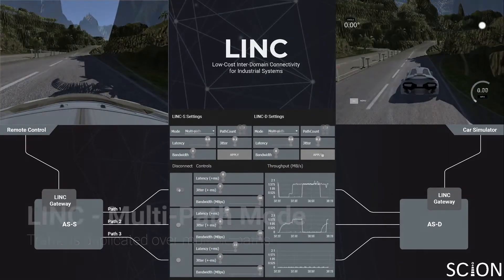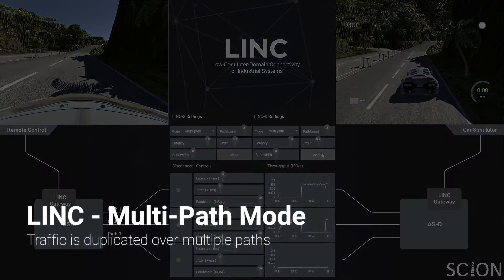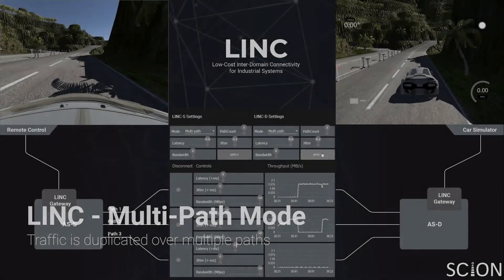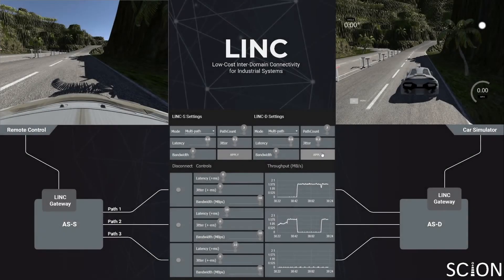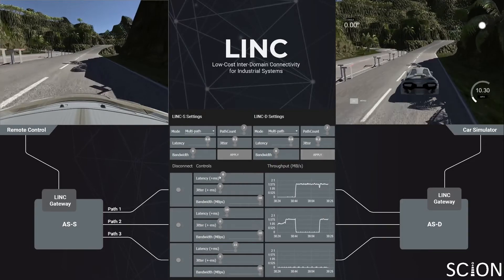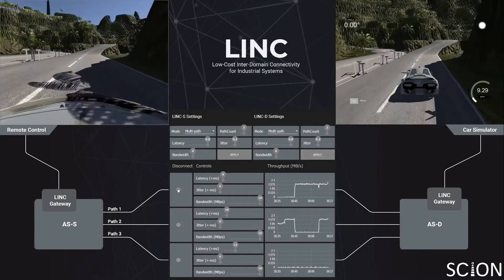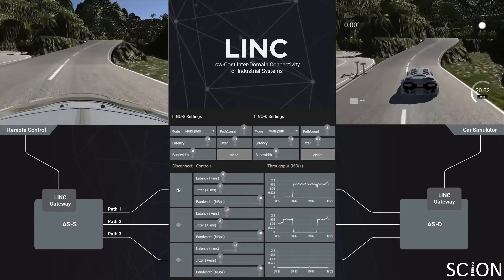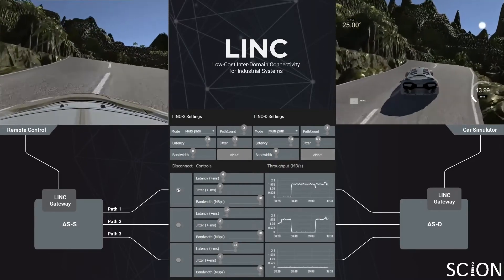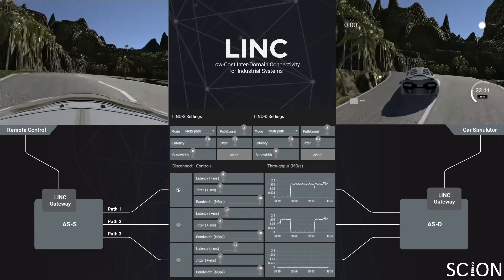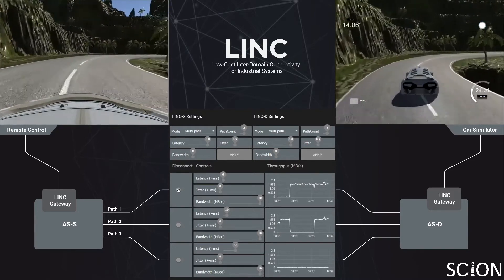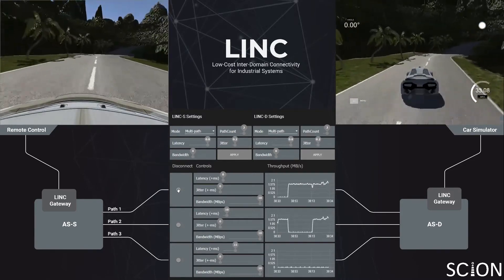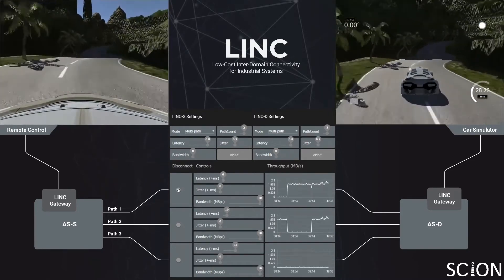In the third scenario, LINK is running in multi-path mode. Traffic is duplicated over multiple paths to provide very high availability and reliability. Here the settings specify duplication over two paths. From the throughput graph, we can see the traffic is duplicated over paths 1 and 2.